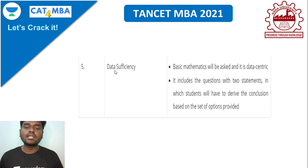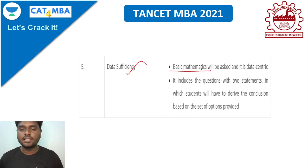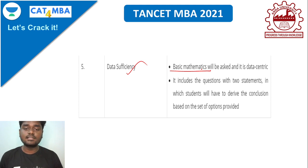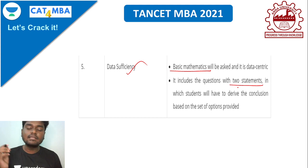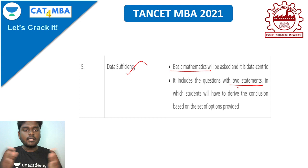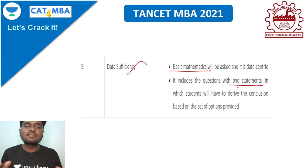The last section is Data Sufficiency, which is closely integrated with the quant part. If you have a sound knowledge of basic mathematics, you can easily crack this. You'll be given 20 questions where you need to check whether the given data is sufficient or not. You'll be given two statements and need to derive a conclusion on whether the provided options are sufficient to answer the question.